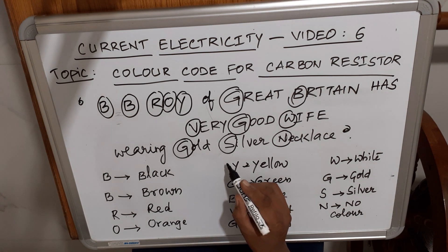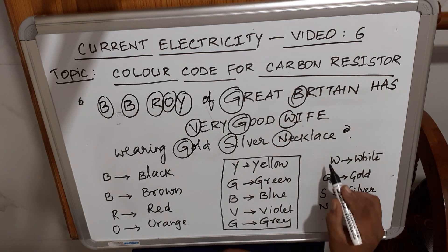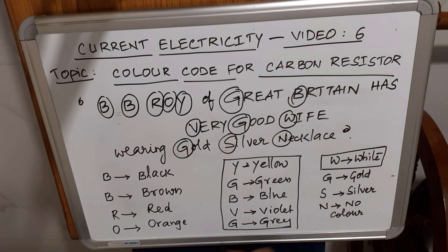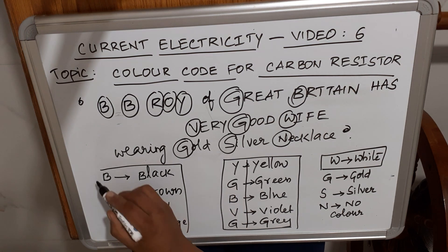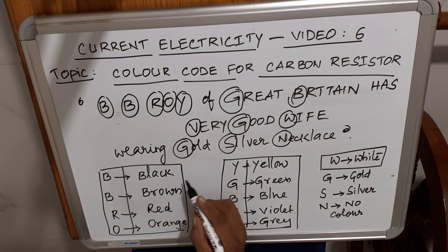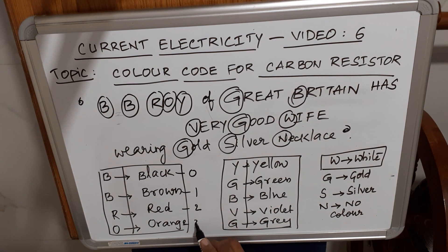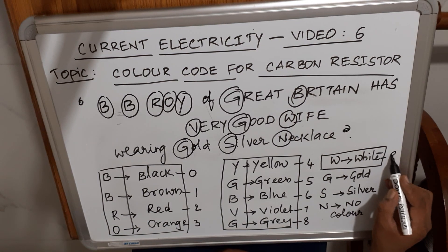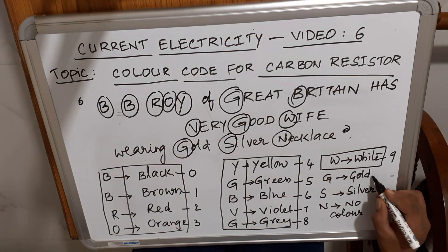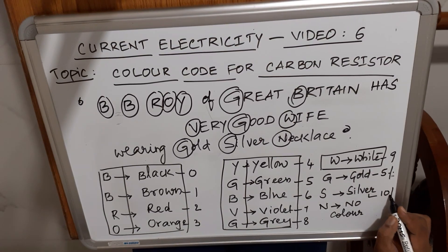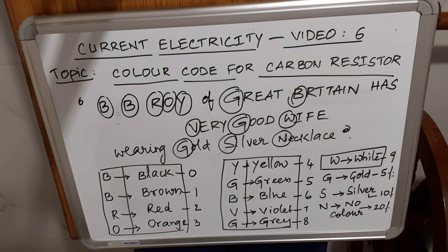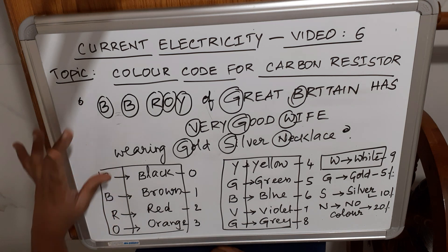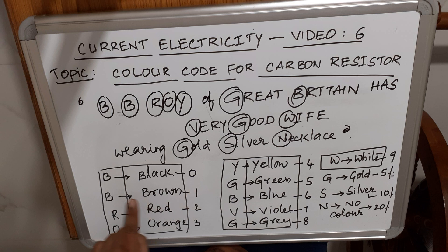We assign numbers to the colors: Black=0, Brown=1, Red=2, Orange=3, Yellow=4, Green=5, Blue=6, Violet=7, Gray=8, White=9. Gold = ±5%, Silver = ±10%, No color = ±20%. Please pause the video here and note down this sentence and the color codes assigned to each color.